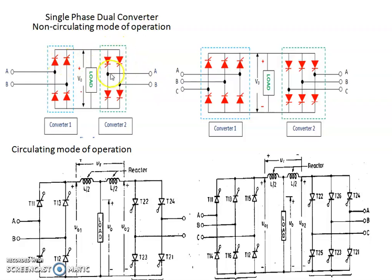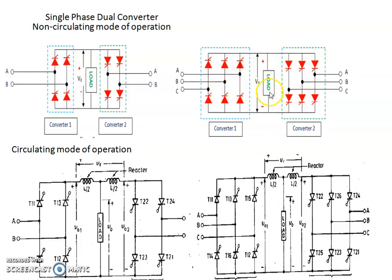This is the circuit configuration of a non-circulating current mode of operation of a dual converter. A dual converter consists of two fully controlled converters connected in anti-parallel across the load. There are two types of full converters: single-phase fully controlled converter and three-phase fully controlled converter. Therefore, there are two types of dual converter: single-phase dual converter and three-phase dual converter. A single-phase dual converter consists of two single-phase fully controlled converters connected in anti-parallel. Similarly, a three-phase dual converter consists of two three-phase fully controlled converters connected in anti-parallel across the load.